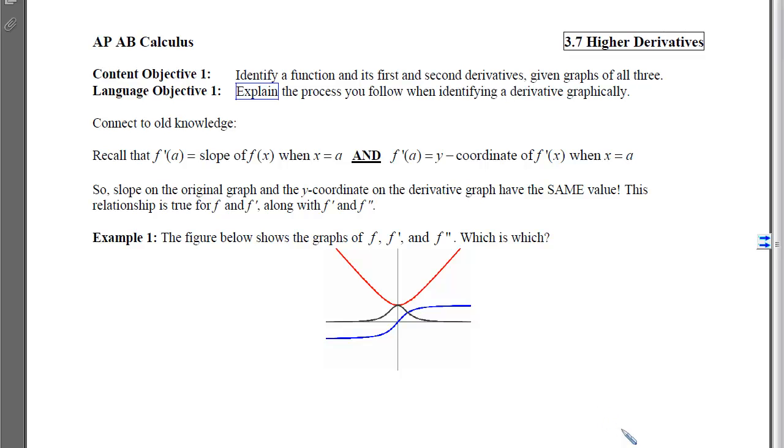So before we get into the examples, I want to remind you that f prime of a is the slope of f when x equals a. That means f prime of a is the y-coordinate of f prime when x equals a in addition to being the slope of the original. So slope on the original graph and the y-coordinate on the derivative graph will have the same value. This is true going from f to f prime. It's also true going from f prime to f double prime.